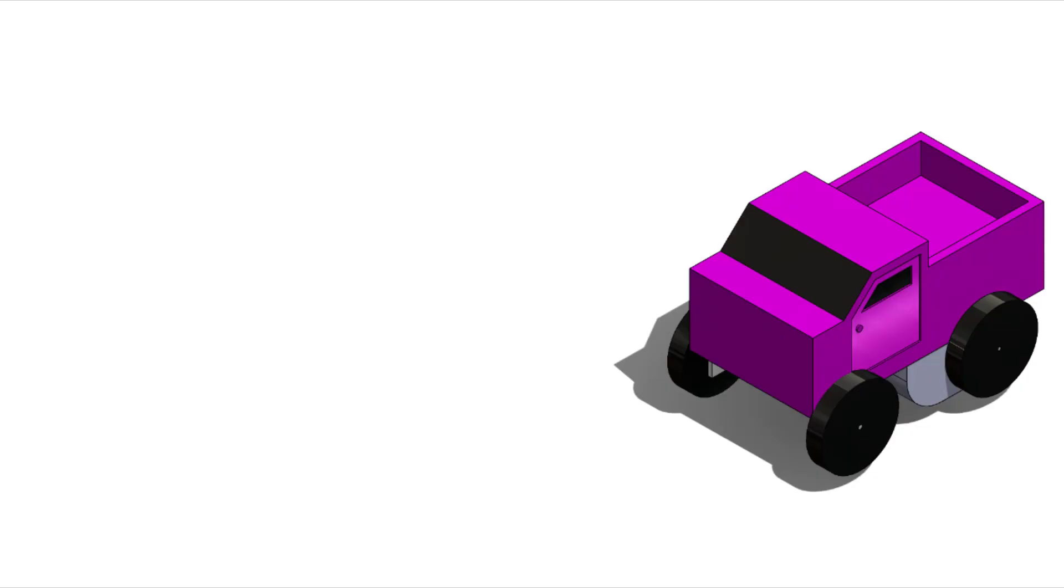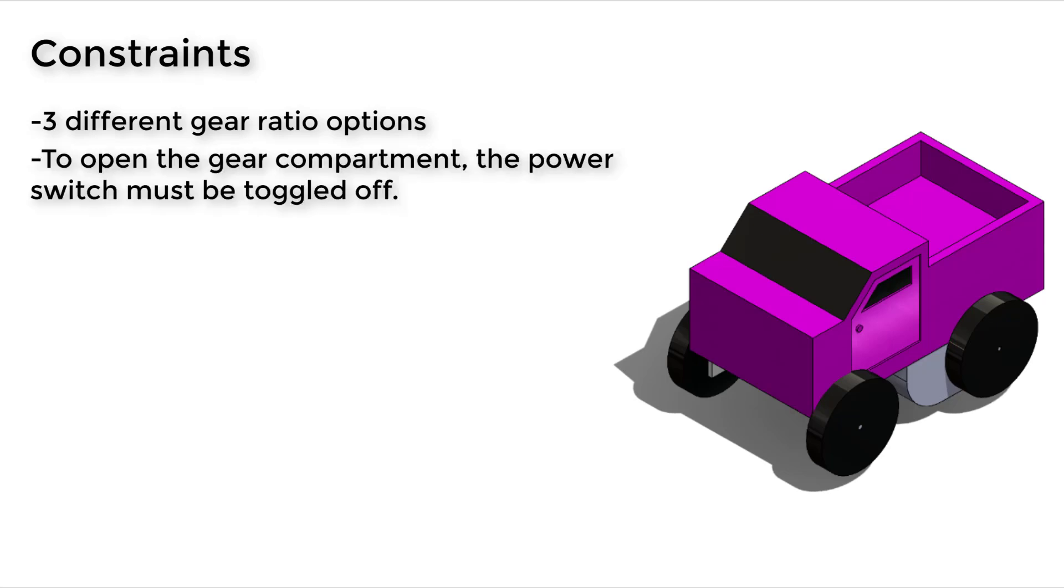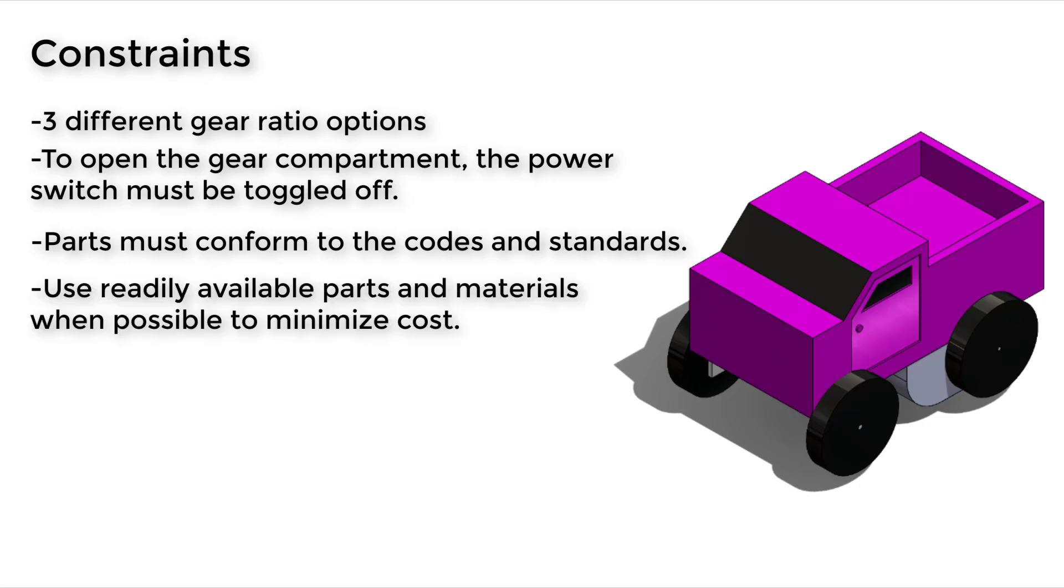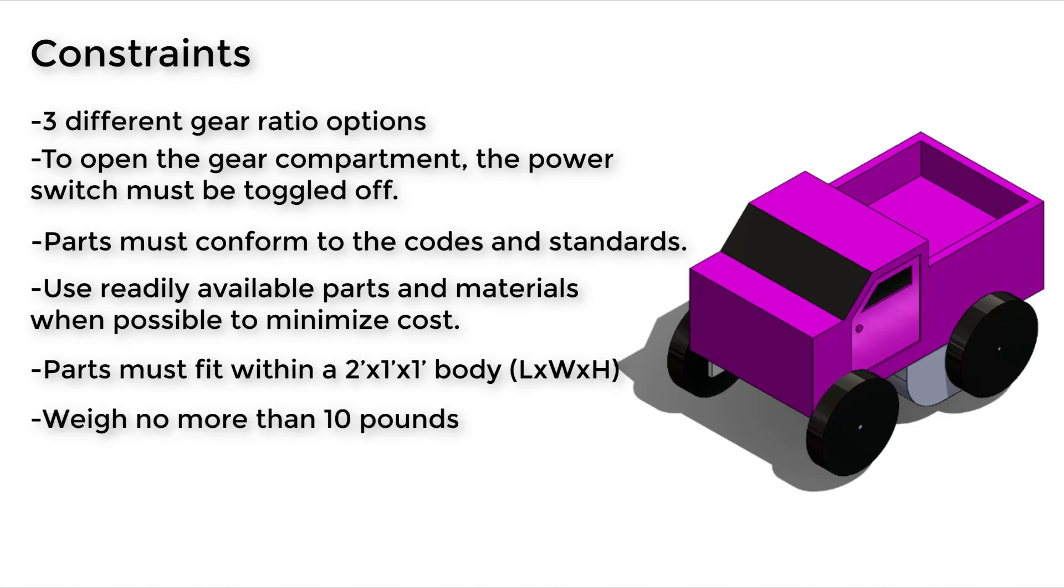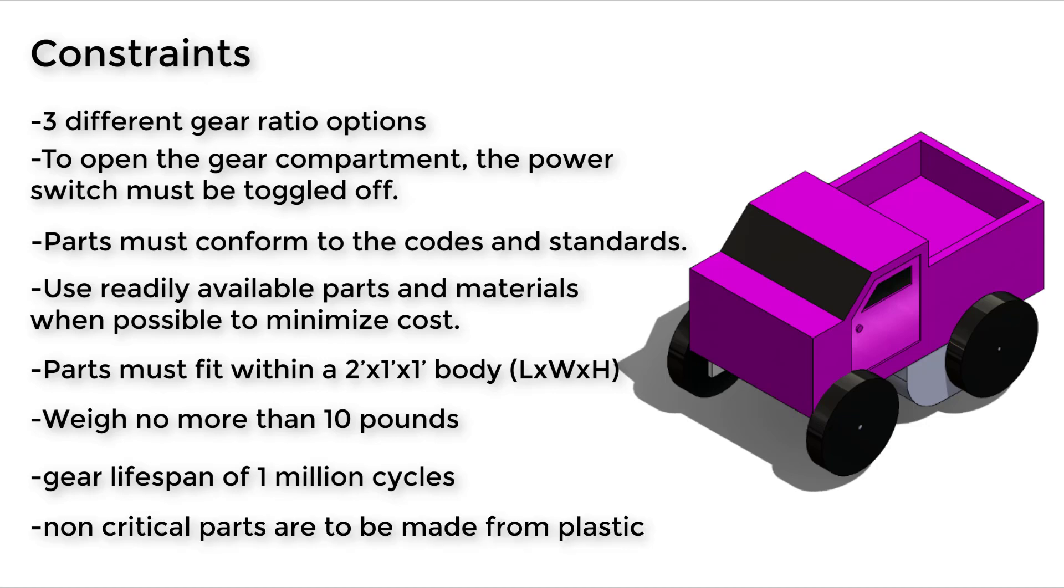For the constraints, the device must provide three different gear ratio options, and to open the gear compartment, the power switch must be toggled off. Also, the parts must conform to the standards set by the American Society for Testing and Materials and the Consumer Product Safety Commission. The design must use readily available parts and materials when possible to minimize cost. Our target range is $100. Parts must fit within a 2 by 1 by 1 foot body, and the toy must also weigh no more than 10 pounds. Each replaceable gear should have a minimum lifespan of 1 million cycles, and the body of the truck and non-critical parts are to be made from plastic.